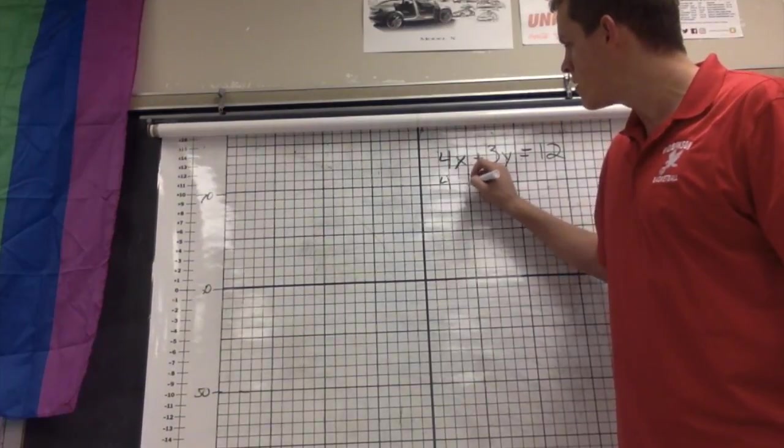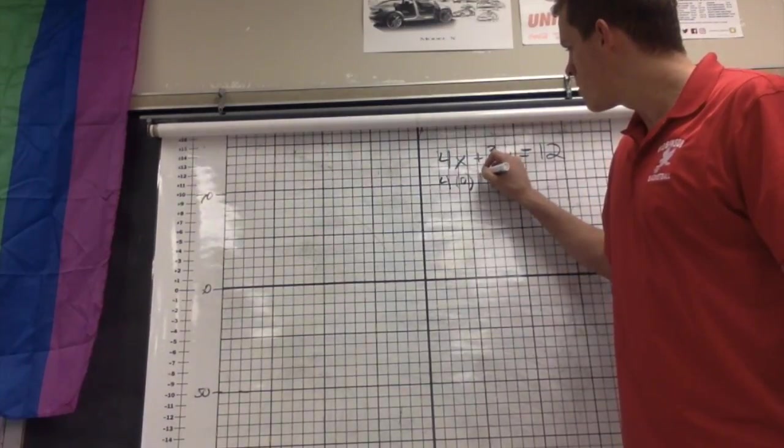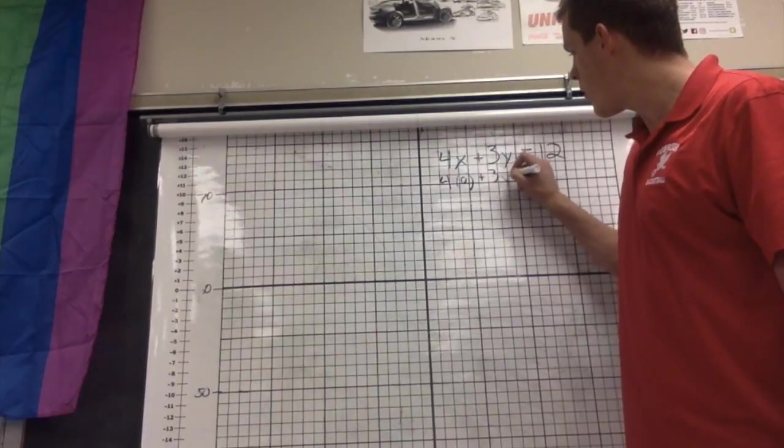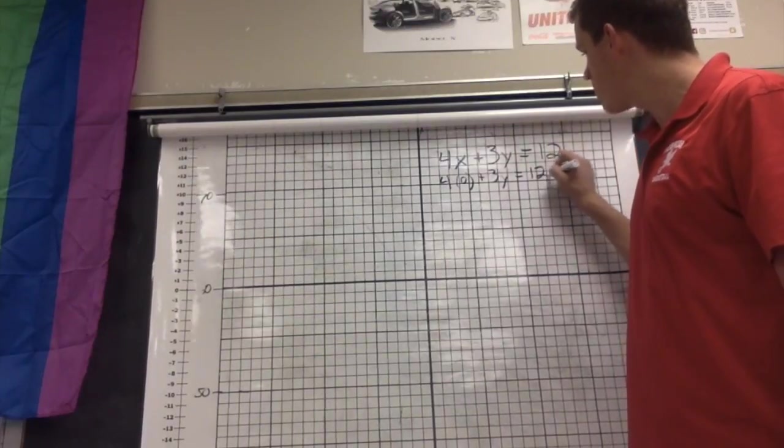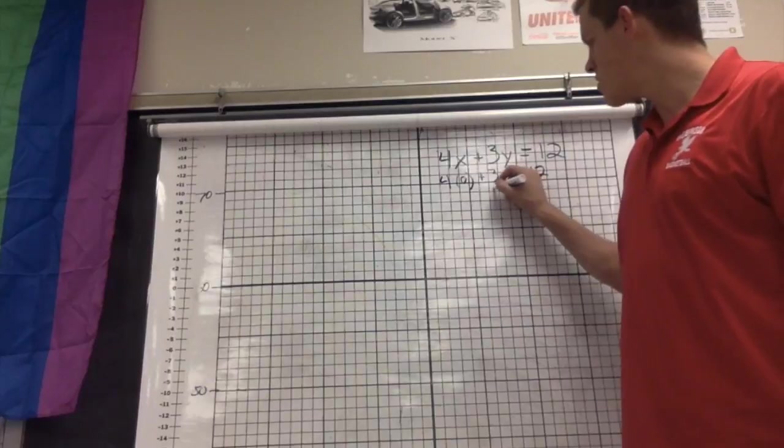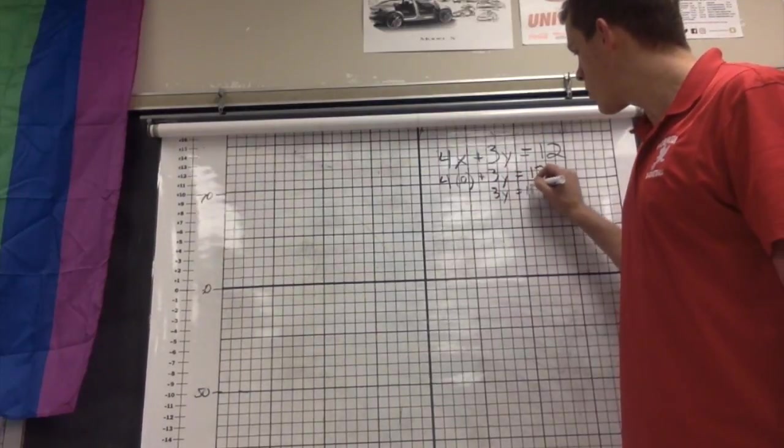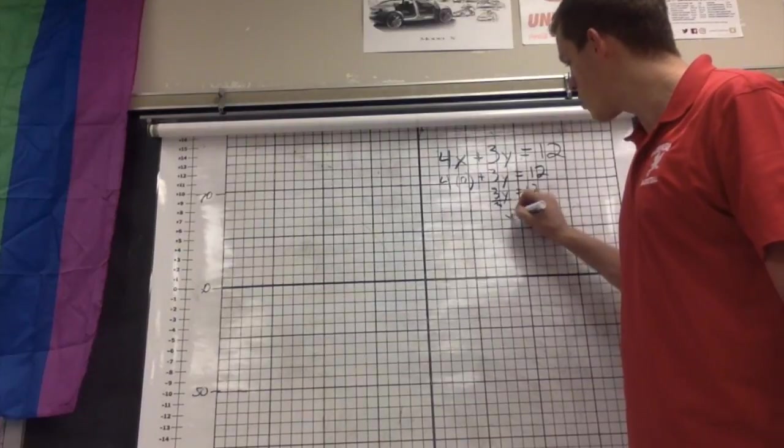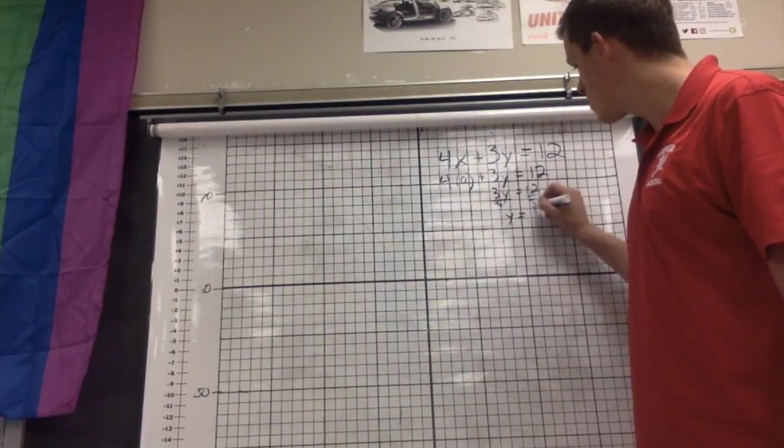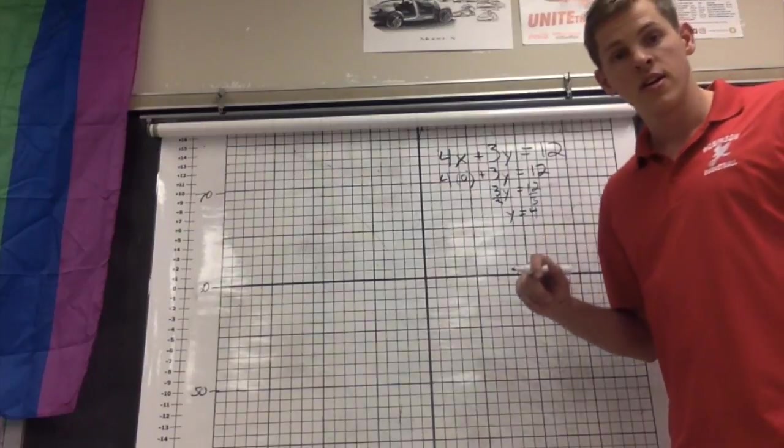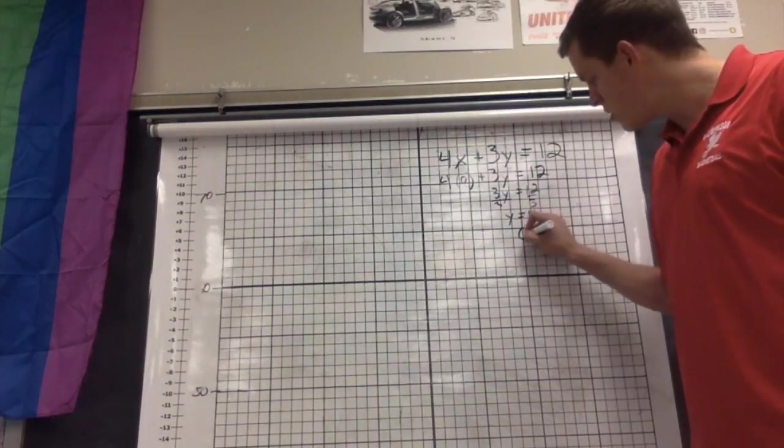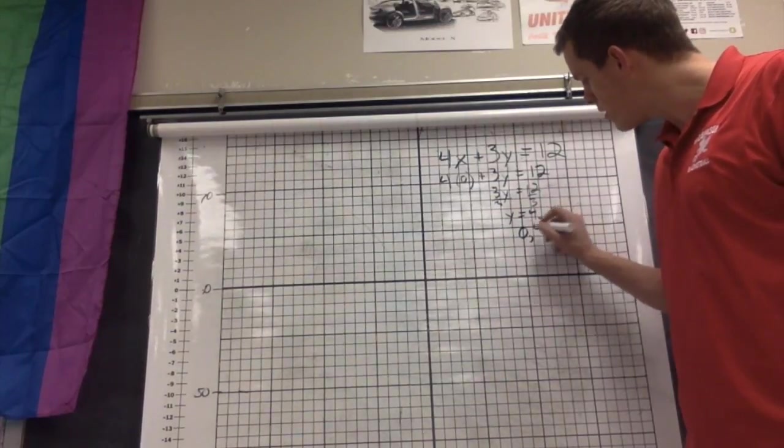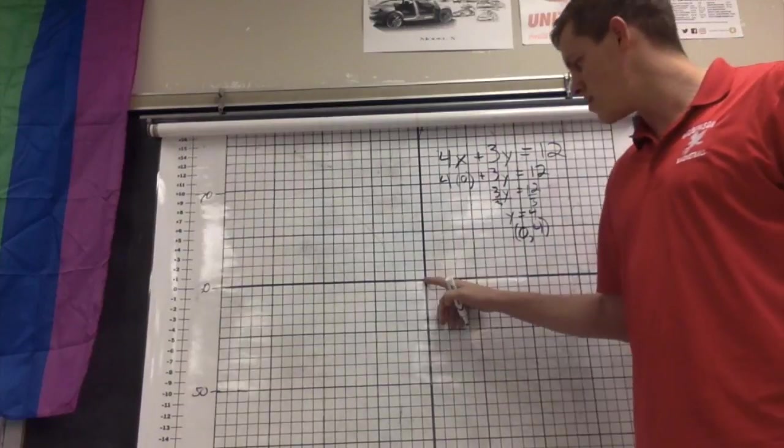So if I put in a 0 for x, I'm going to end up with 4 times 0 plus 3y equals 12. That's going to turn into 3y equals 12. Divide both sides by 3 and I end up with y equals 4. So my first coordinate is going to be 0 comma 4, and I'm gonna put it right there.